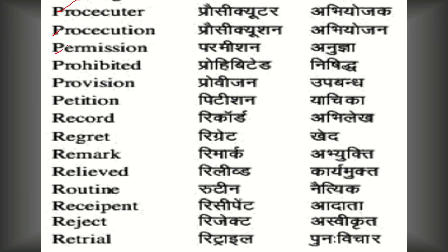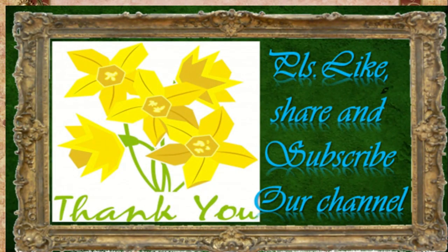Permission - अनुज्ञा, Prohibited - निषिद्ध, Provision - उपबंध, Petition - याचिका, Record - अभिलेख, Regret - खेद, Remark - अभियुक्त, Relieved - कार्यमुक्त, Routine - नैत्यक, Recipient - आदाता, Reject - अस्वीकृत, Retrial - पुनर्विचार। So today's Part 5 of परिभाषिक शब्दावली also ends here.